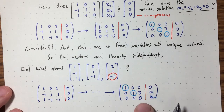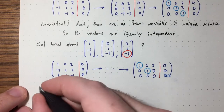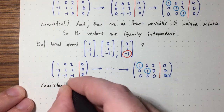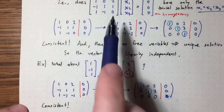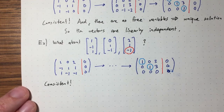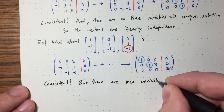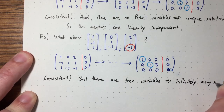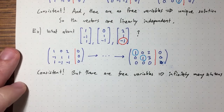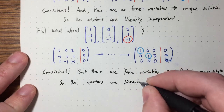We have pivots in the first two columns but not the third, so there is a free variable. Free variables imply infinitely many solutions. The system is still consistent — it's homogeneous — but there are infinitely many solutions. So the vectors are linearly dependent this time.